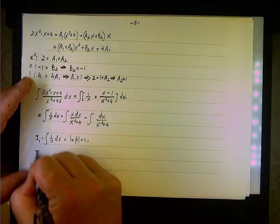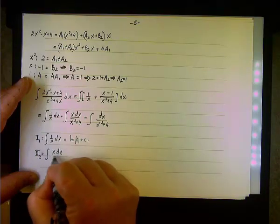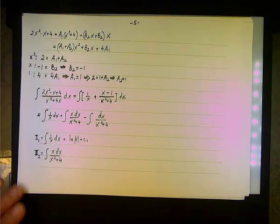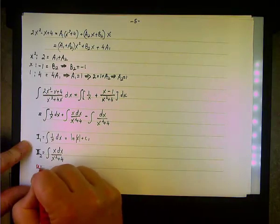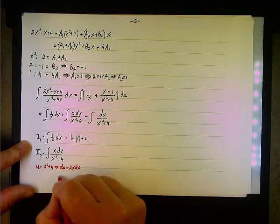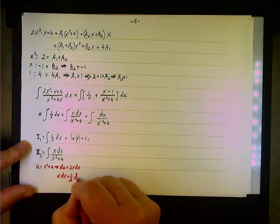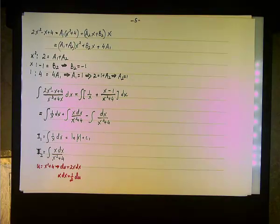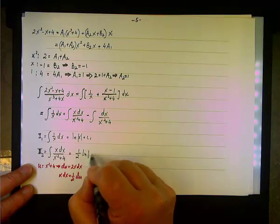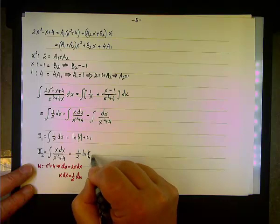The second integral I2 = ∫ x dx / (x² + 4). Here we do a u-substitution: let u = x² + 4, so du = 2x dx, and therefore x dx = ½ du. We get ½ ∫ du/u = ½ ln|u| = ½ ln(x² + 4). No absolute value is needed since x² + 4 can never be negative.